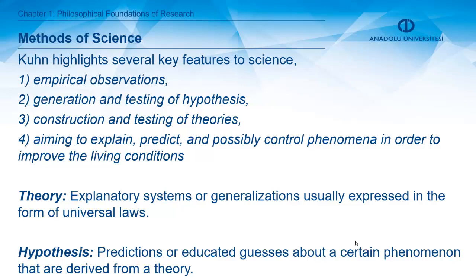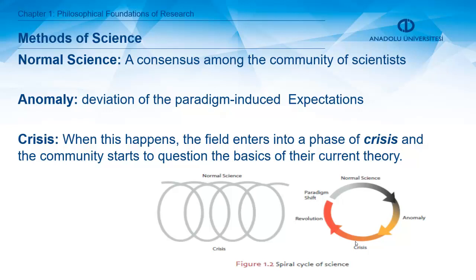According to Kuhn, key features of science include empirical observations, generation and testing of hypotheses, and construction and testing of theories. Scientific processes should aim to explain, predict, and possibly control phenomena in order to improve human living conditions. He proposes two important terms: theory, defined as explanatory systems or generalizations expressed as universal laws; and hypothesis, defined as predictions or educated guesses about a phenomenon derived from a theory.